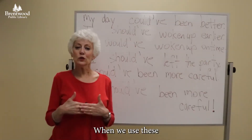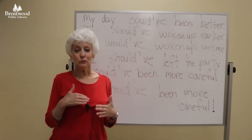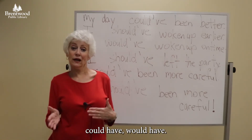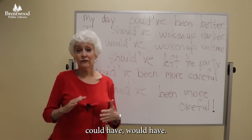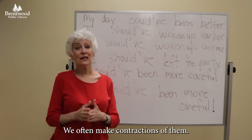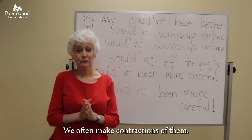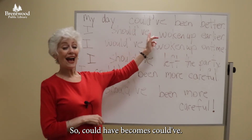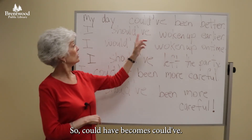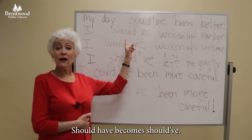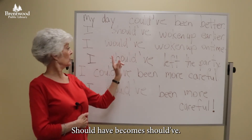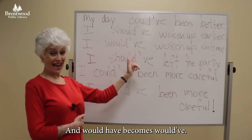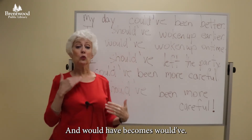When we use these modal verbs — should have, could have, would have — we often make contractions of them. So could have becomes could've, should have becomes should've, and would have becomes would've.